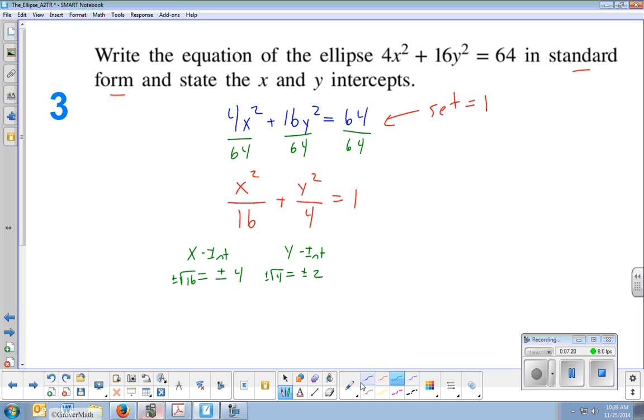Okay, so if you were to graph this, and you're not asked to, but if you were to graph this, just try a rough sketch of it. The x intercepts would be at 4. So let's say this is negative 4, and this is positive 4. And your y intercepts would be at 2. So here's your 2 and your negative 2.